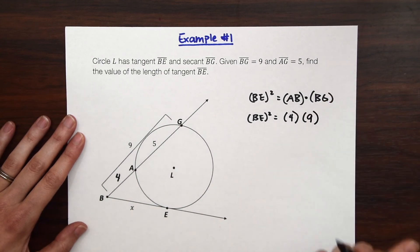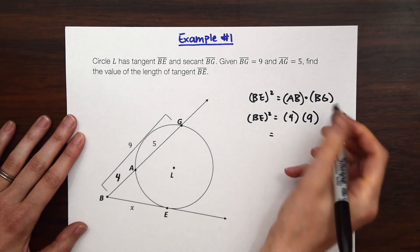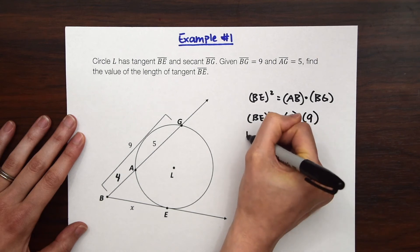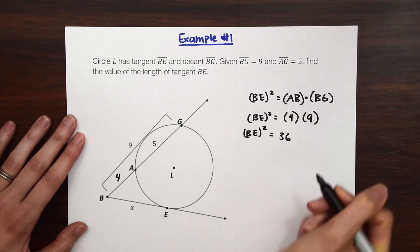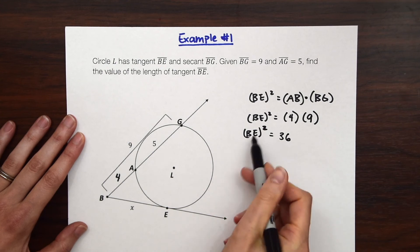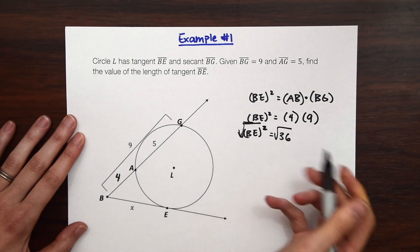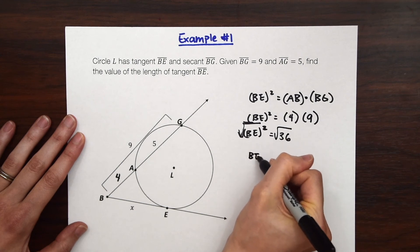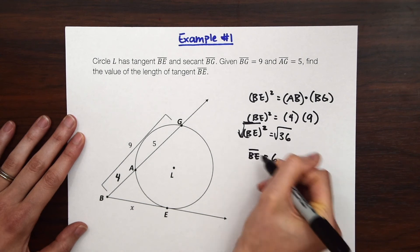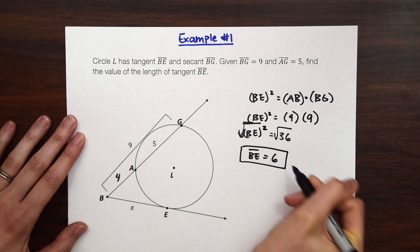And now we just need to calculate this. So 9 times 4 is 36, BE squared. So now to get rid of that square we're just going to take the square root of both sides and we're left with BE is equal to 6 which is our answer.